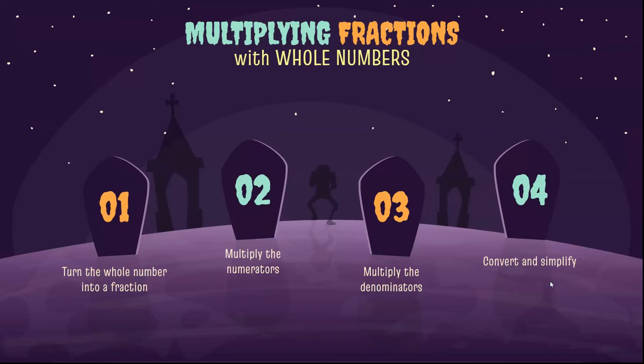Let's remember that we turn the whole number into a fraction by putting a 1 under it. We simply multiply the numerators, multiply the denominators, and then we always—no matter what kind of problem we're doing—check to see if we can convert and simplify.